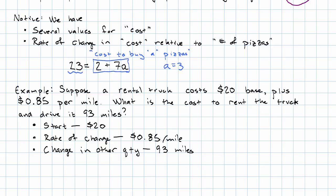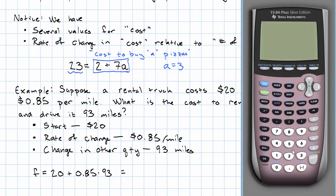Therefore, the final value is the starting value of $20 plus $0.85 times 93 miles. What does that work out to? This is totally a job for the calculator.